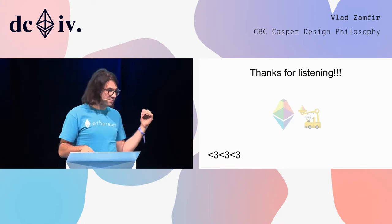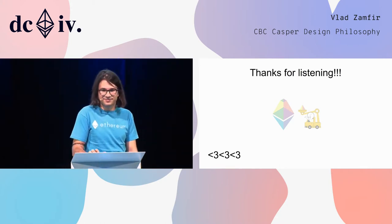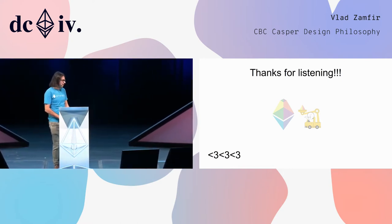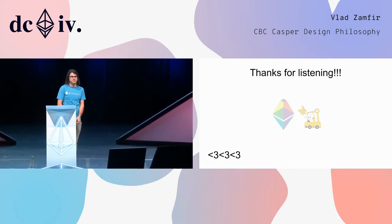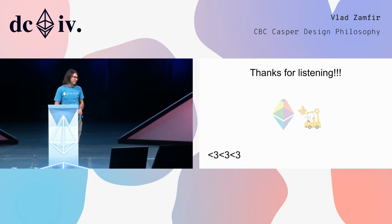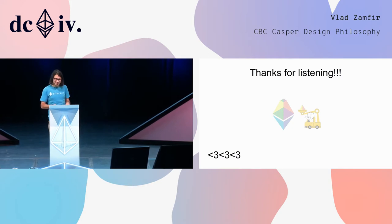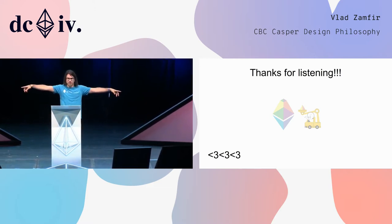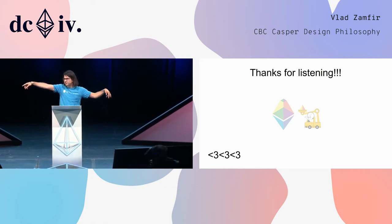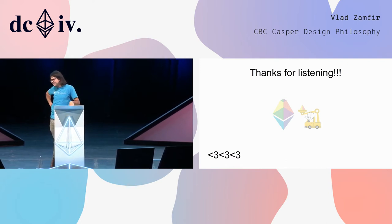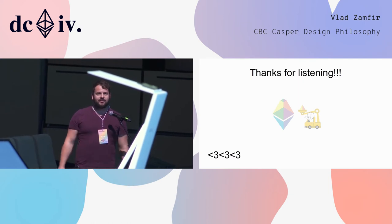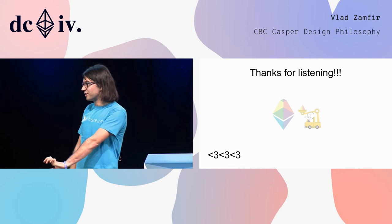I have time for one question. Someone asks: what's a good way of really understanding CBC if you come from a math background? Read the paper — it's set theory and very accessible. The paper is at github.com/CBC-Casper. Thanks so much for listening.